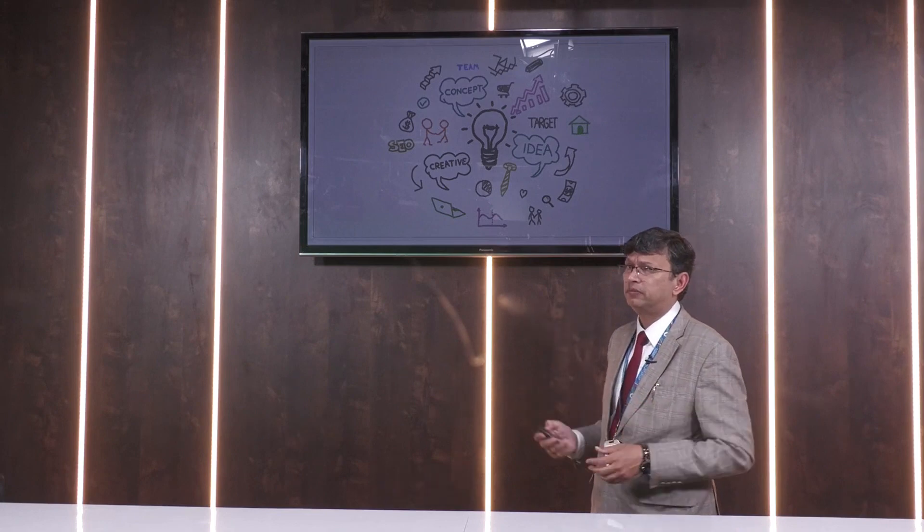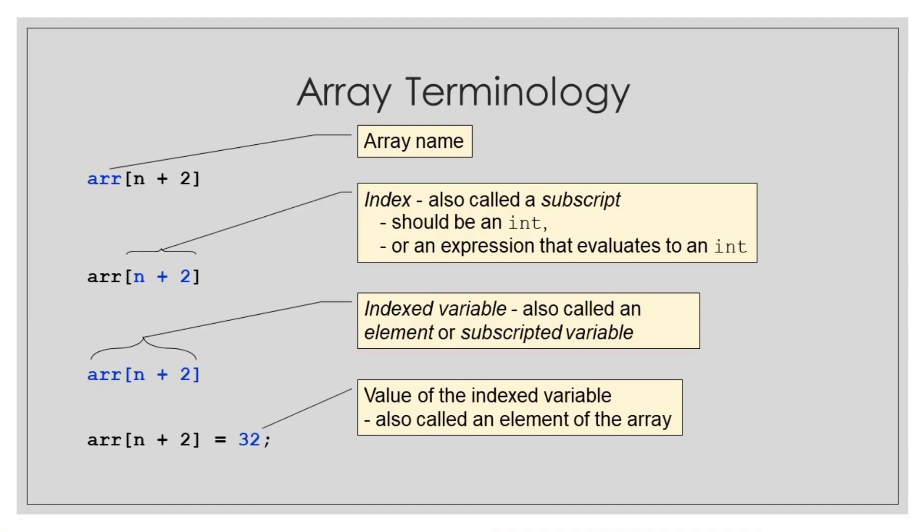Let's get on with some more concepts of array. We have by now understood that there is an array name which is like in our case ARR, then under square bracket we can write n plus 2 as well. Now n plus 2 is the index which is also called the subscript. Subscript can have a value or an expression which can be evaluated to a value.